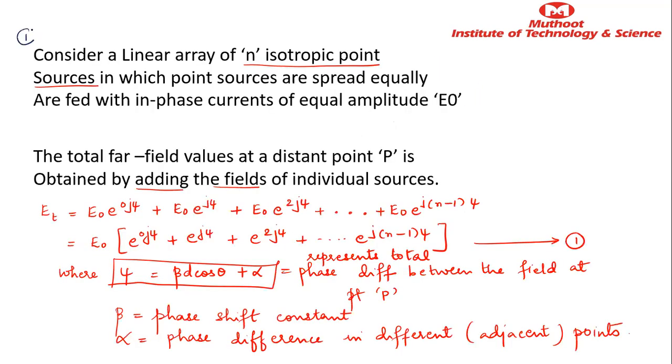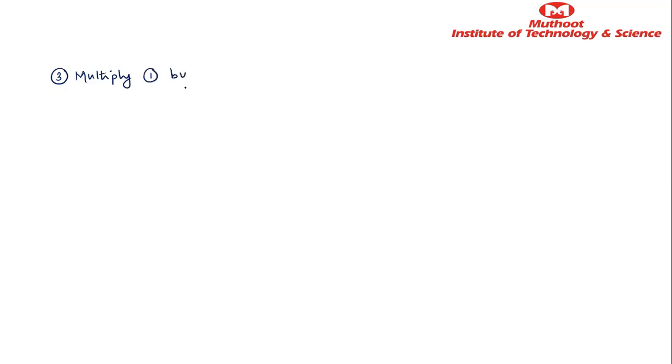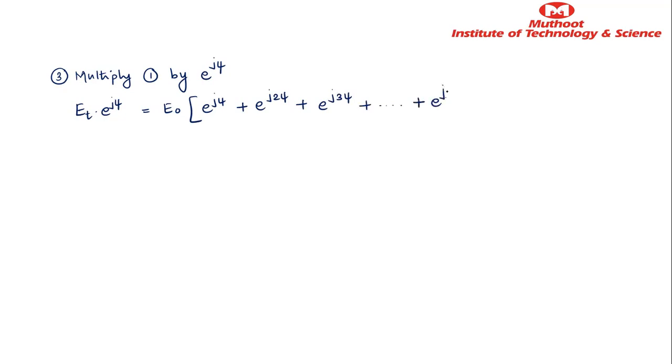For further simplification, going to point 3 of the derivation, I am going to multiply E_total by e^(jψ). So E_total · e^(jψ) = E₀ · [e^(jψ) + e^(j2ψ) + e^(j3ψ) + ... + e^(jNψ)]. Let us call this equation number 2.